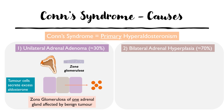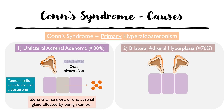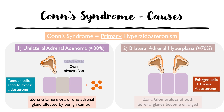Moving on to bilateral adrenal hyperplasia, both adrenal glands undergo cellular enlargement, resulting in more aldosterone being secreted. Comparing the two conditions: in unilateral adrenal adenoma the zona glomerulosa of only one gland is affected, whereas in bilateral adrenal hyperplasia the zona glomerulosa layers of both glands become enlarged. This distinction is important because management depends on which condition the patient has.